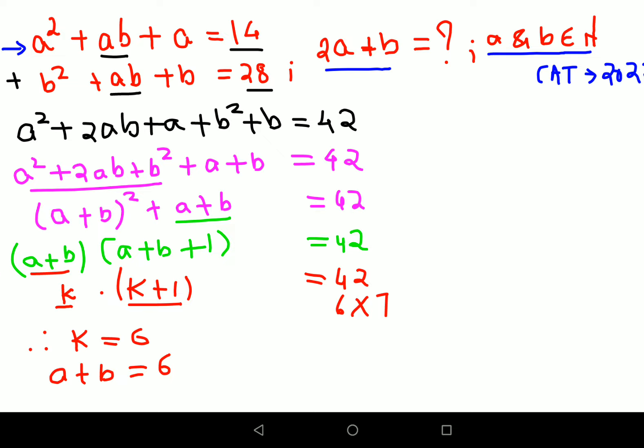So I hope this is very clear till now. Now what do we do? Now let's focus on this particular equation, the first equation which they have given us. So from this if I take A common, I am left with A(A + B + 1) equals to 14.